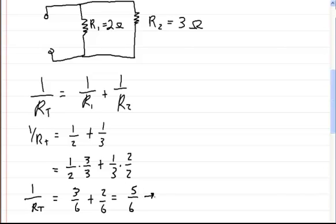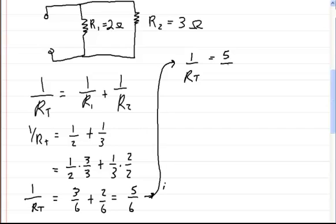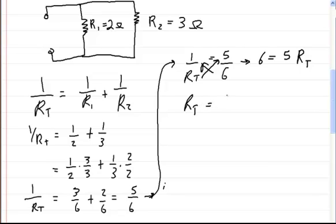If you manipulate that, you're going to cross-multiply and divide. So 1 over RT equals 5 over 6 — cross-multiply and divide — you get 6 equals 5 times RT, then divide that out, and you get RT equals 6 over 5, or 1.2 ohms. You can use the first formula for however many resistors are in parallel.